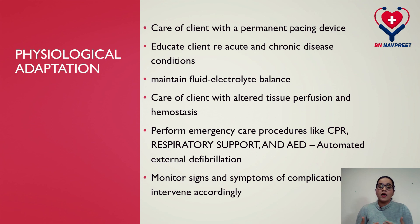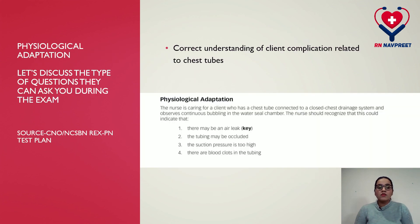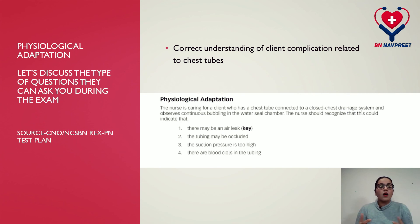This category also includes: care of clients with a permanent pacing device, educating clients regarding acute and chronic disease conditions, maintaining fluid and electrolyte balance, care of clients with altered perfusion and hemostasis, performing emergency procedures like cardiopulmonary resuscitation, respiratory support and automated external defibrillation, and monitoring signs and symptoms of complications and taking necessary interventions. Sample item: The nurse is caring for a client who has a chest tube connected to a closed chest drainage system and observes continuous bubbling in the water seal chamber. The nurse should recognize this could indicate an air leak. The correct answer is option one.